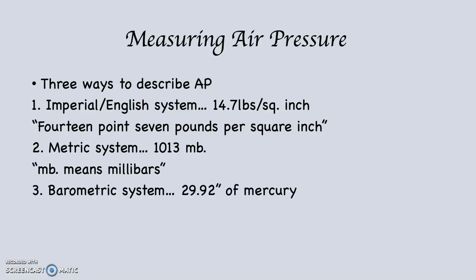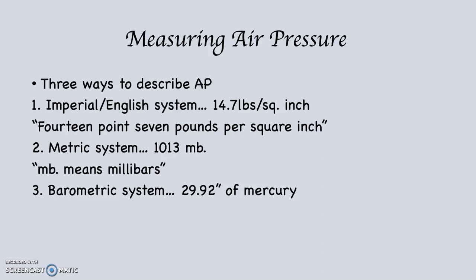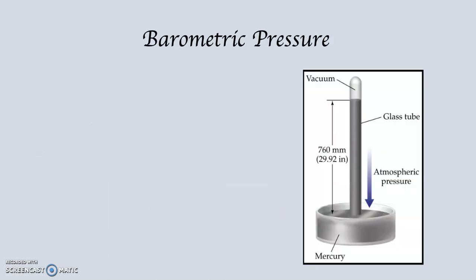The third one is barometric pressure. On an average day at sea level, we say there are 29.92 inches of mercury, pronounced: 29.92 inches of mercury. Now, this is the one that's commonly given on the news. At the same time, there is no mercury — nobody really uses mercury anymore to do this. I'll tell you how we came up with this system.